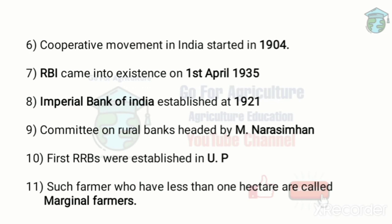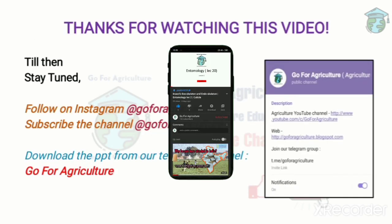Marginal farmers are those who have less than one hectare of land. Small farmers are those who have land between one to two hectares.